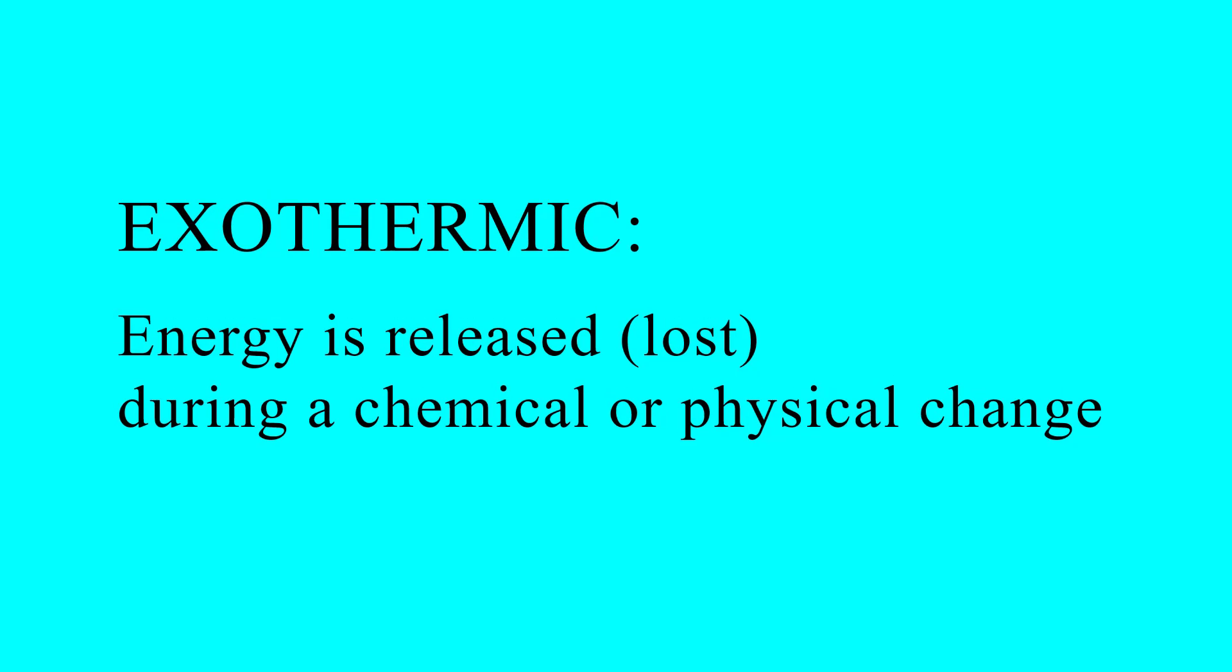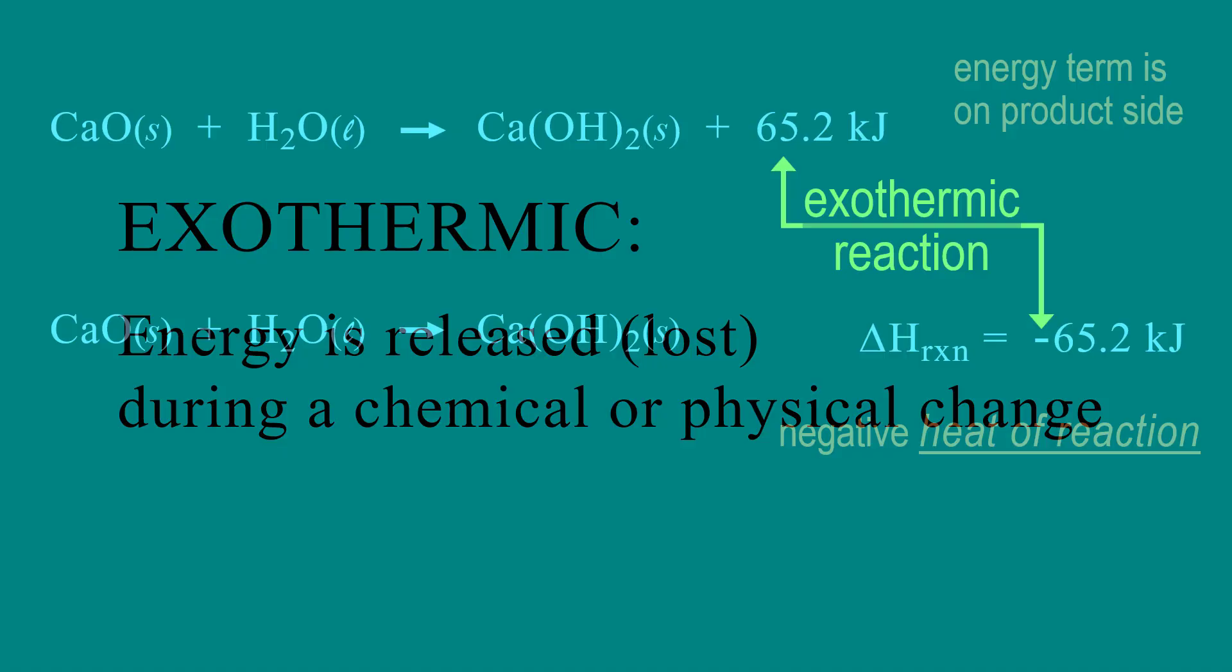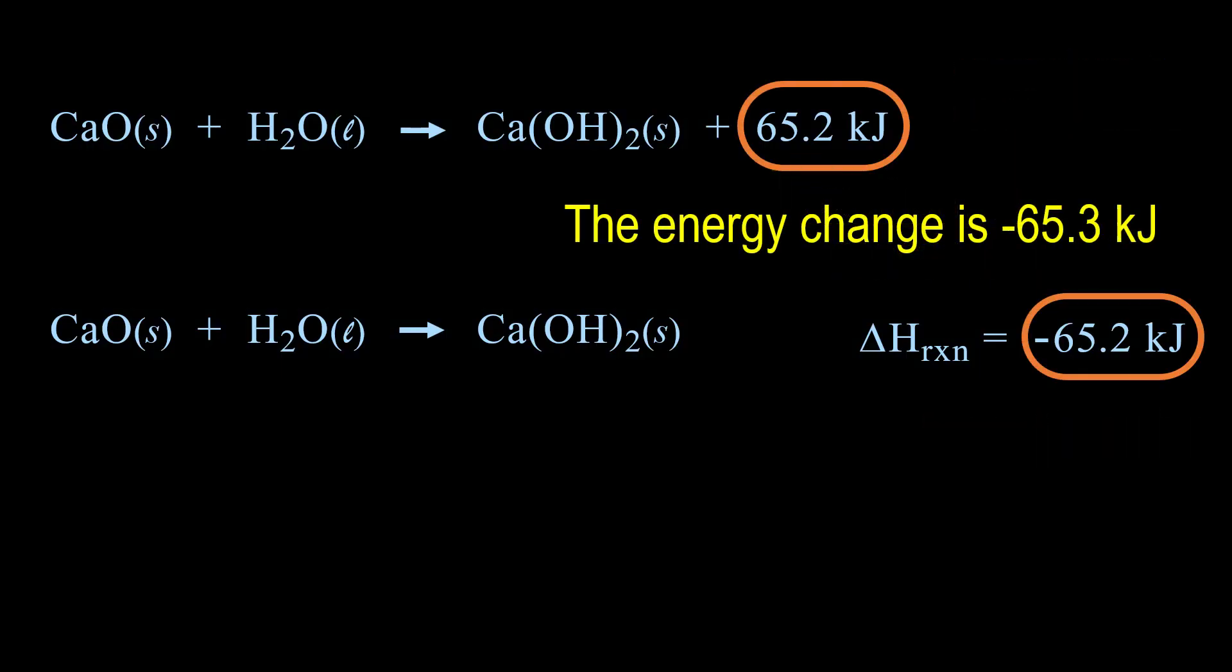An exothermic process occurs when energy is released or lost during a chemical or physical change. By placing the energy term on the product side, or by showing it as a negative heat of reaction, that is expressing a release or loss of energy.